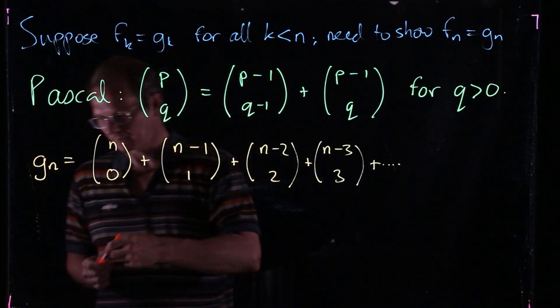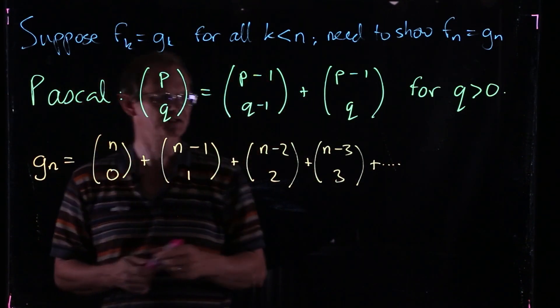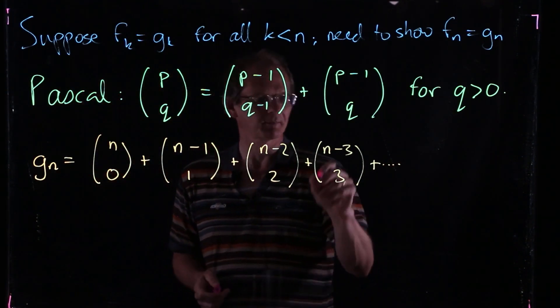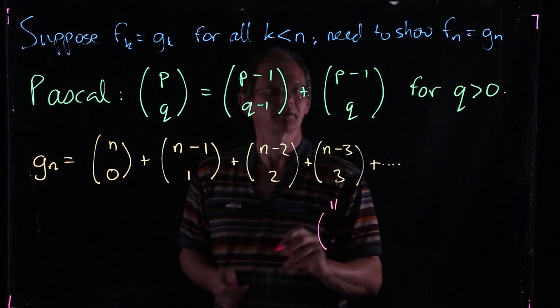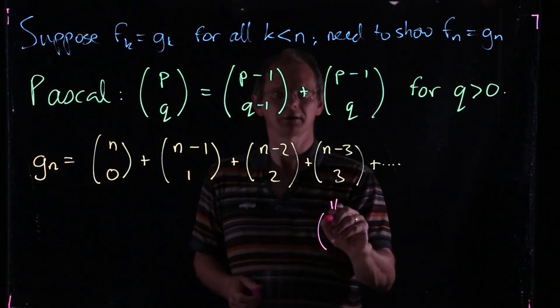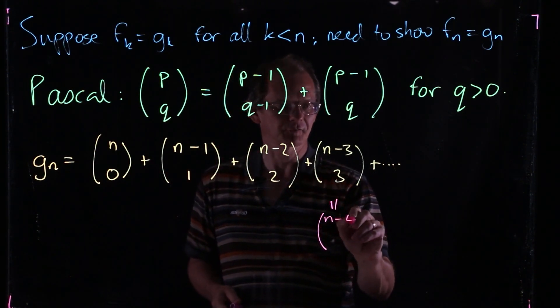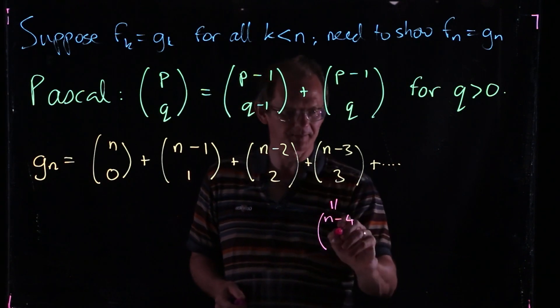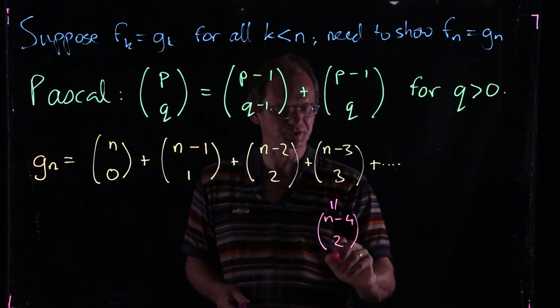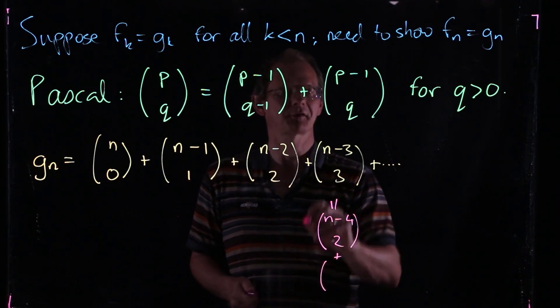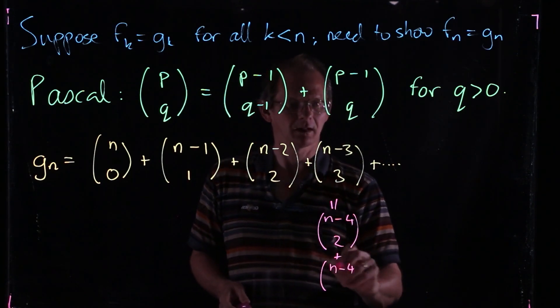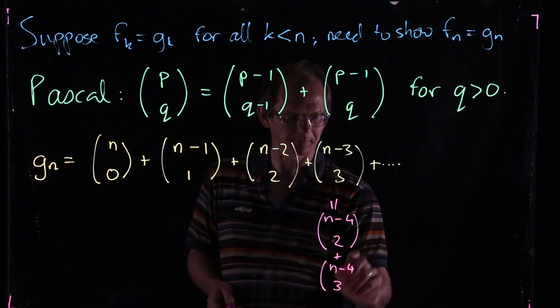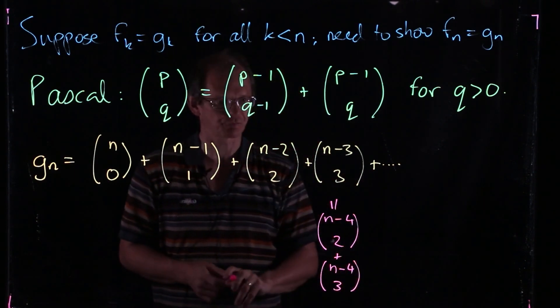So we're going to use Pascal's relation on each of these terms. So let's look at this term here, n-3 choose 3. So by Pascal's relation, you get to reduce the top thing by 1 and reduce the bottom thing by 1. So n-4 choose 2. That was one of the two terms in Pascal's relation. And the other one is where we don't reduce the bottom, leave that as n-4 choose 3.